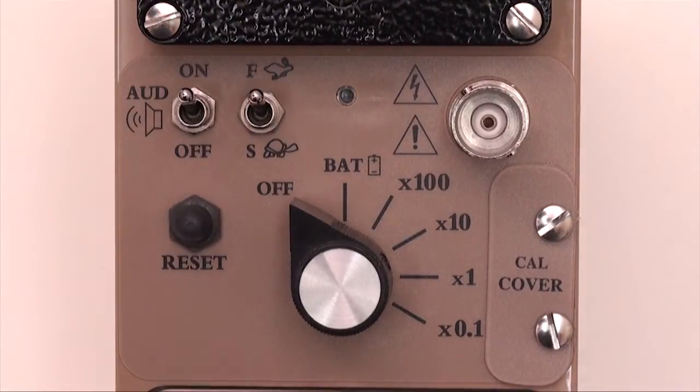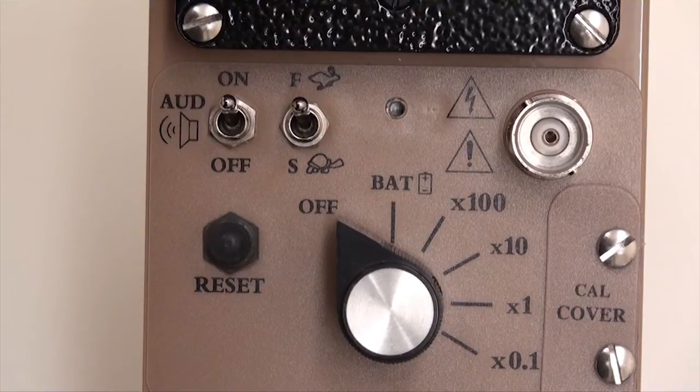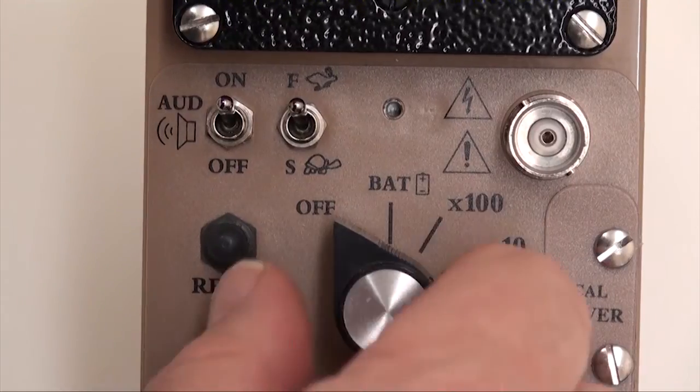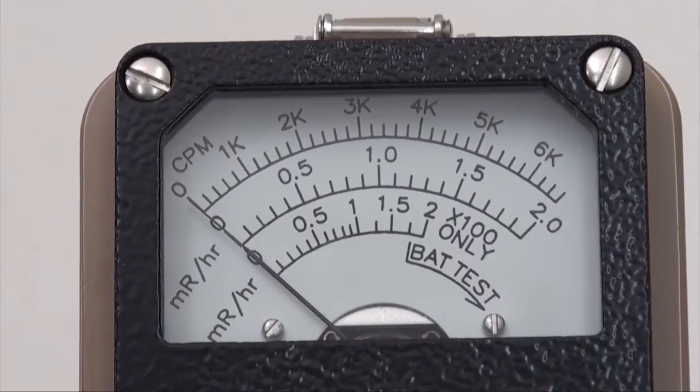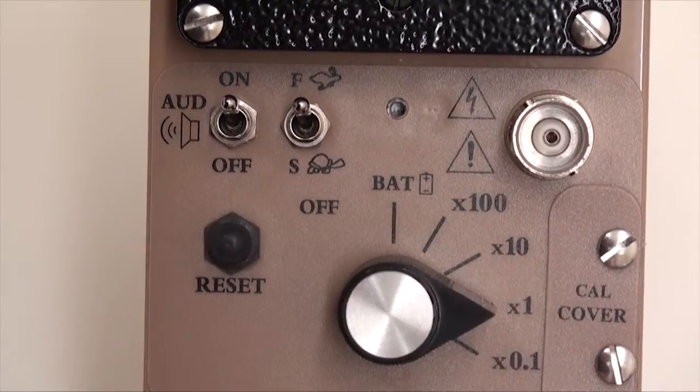The switches are clearly marked for ease of use. The primary control is the six position rotary switch located at the center which turns on the power, facilitates checking the battery status, and enables the user to set the readout to the appropriate operating range.